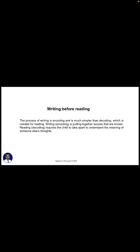Writing comes before reading. The process of writing is encoding, which is simpler than decoding, which is reading. Writing is putting together sounds that are known, while reading requires the child to take apart sounds to understand the meaning of someone's thoughts. Reading is not enough — a child should be able to read and understand what they have read. To write, a child simply needs to turn sounds into letters; to read, a child needs to take apart letters, turn them into phonetic sounds, and put them back together to make a word.